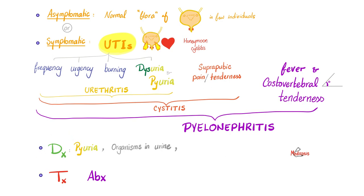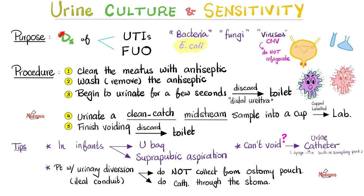How can I diagnose urinary tract infection? Look for bacteria in the urine, look for pus in the urine, and culture the organism in the urine. Treatment: antibiotics. You can order sensitivity tests to help you choose which antibiotic. So why do we do urine culture and sensitivity? To diagnose urinary tract infections and to diagnose fever of unknown origin (FUO).